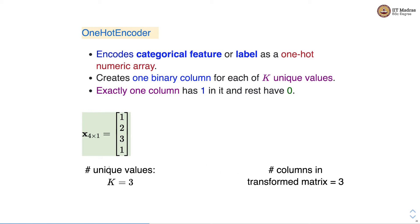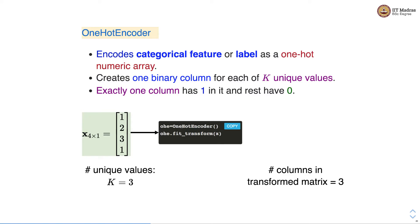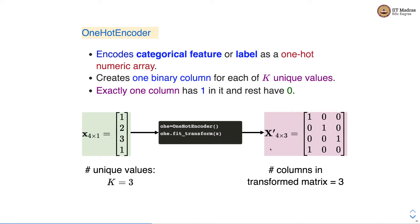Each column corresponds to a unique value. We first instantiate a one-hot encoder object and call fit_transform method on the original feature matrix. Remember, this is the fit_transform method because one-hot encoder is a transformer. We get a transformed feature matrix which is 4×3. There are four samples and three columns, where the first column corresponds to value 1, the second column to value 2, and the third column to value 3.